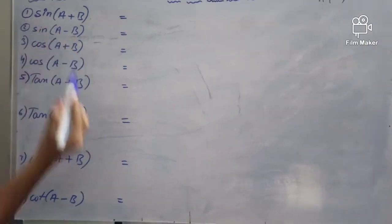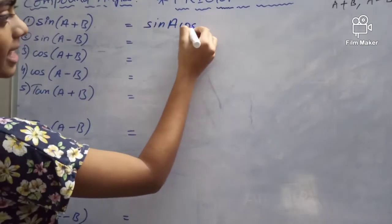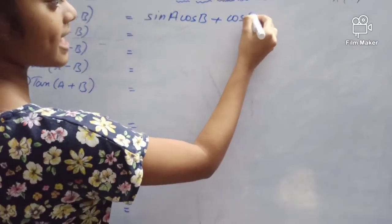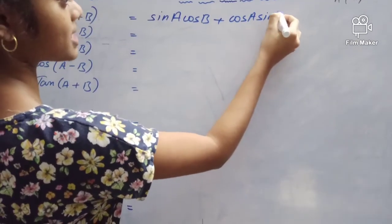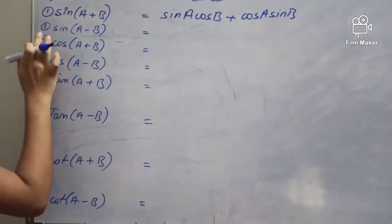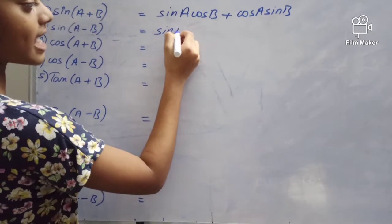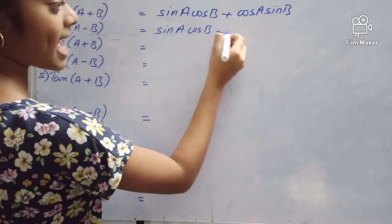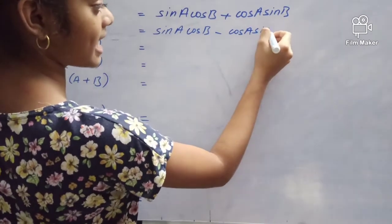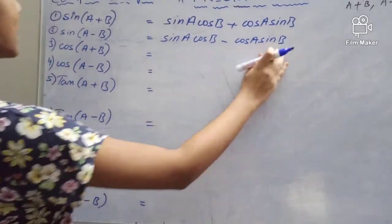Sine of A plus B equals sine A cos B plus cos A sine B. Sine of A minus B equals sine A cos B minus cos A sine B.